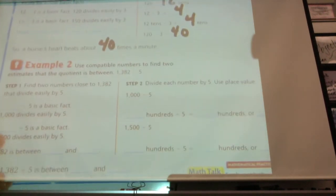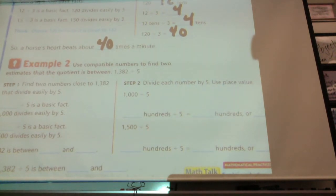We'll do example two first. Example two: use compatible numbers to find two estimates that the quotient is between. This is kind of like we did in lesson 4-1, where we were saying it was between this number and this number.